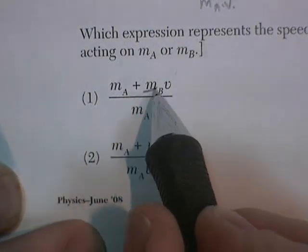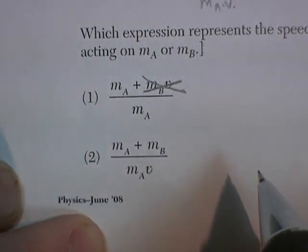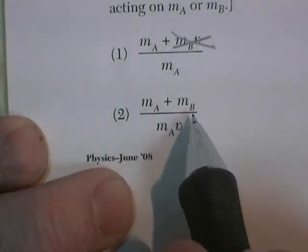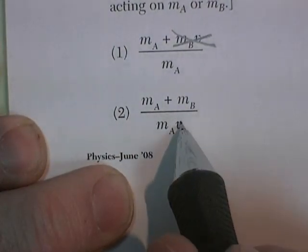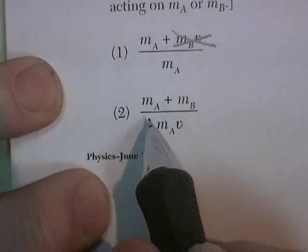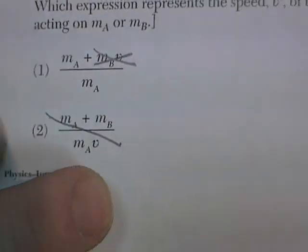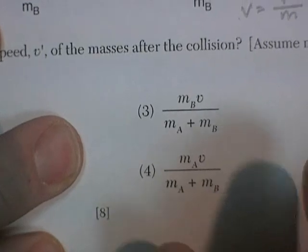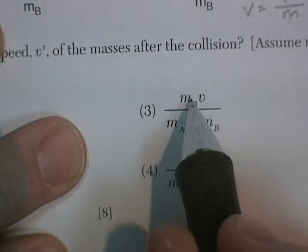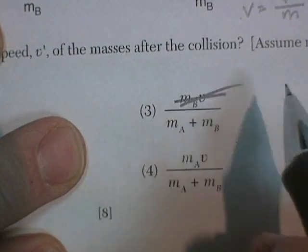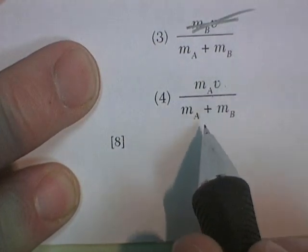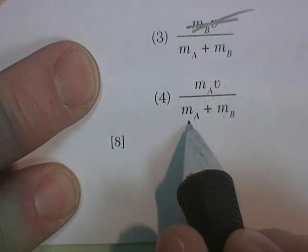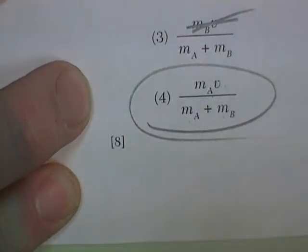Let's check the choices. Choice one: mass B had no momentum, so that can't be it. Choice two: mass A plus mass B divided by mass A times V — that's the reciprocal of what we're looking for. Choice three: mass B had no momentum, so no. Choice four: mass A times V — the momentum before — divided by the total mass. That looks like the right answer.